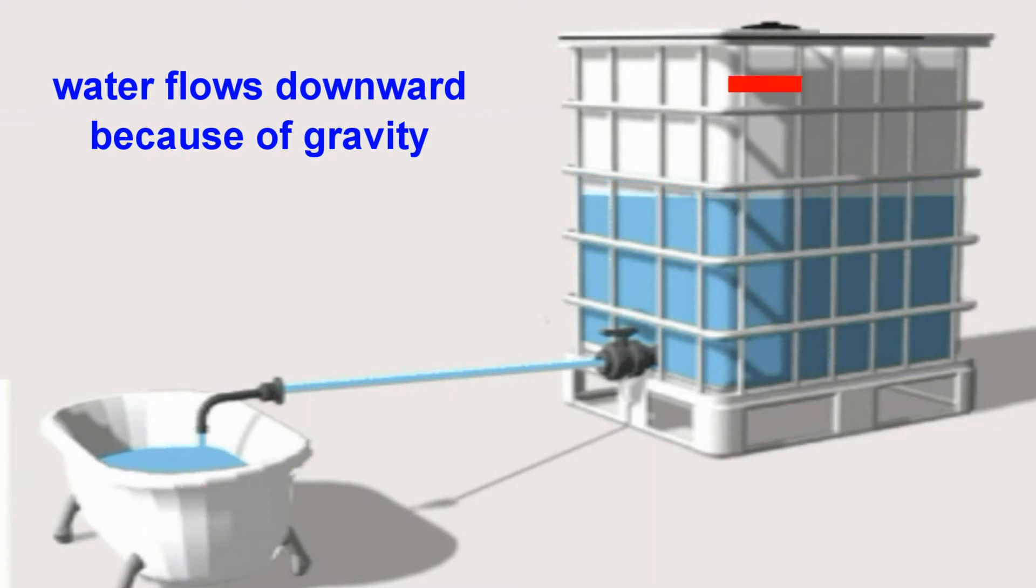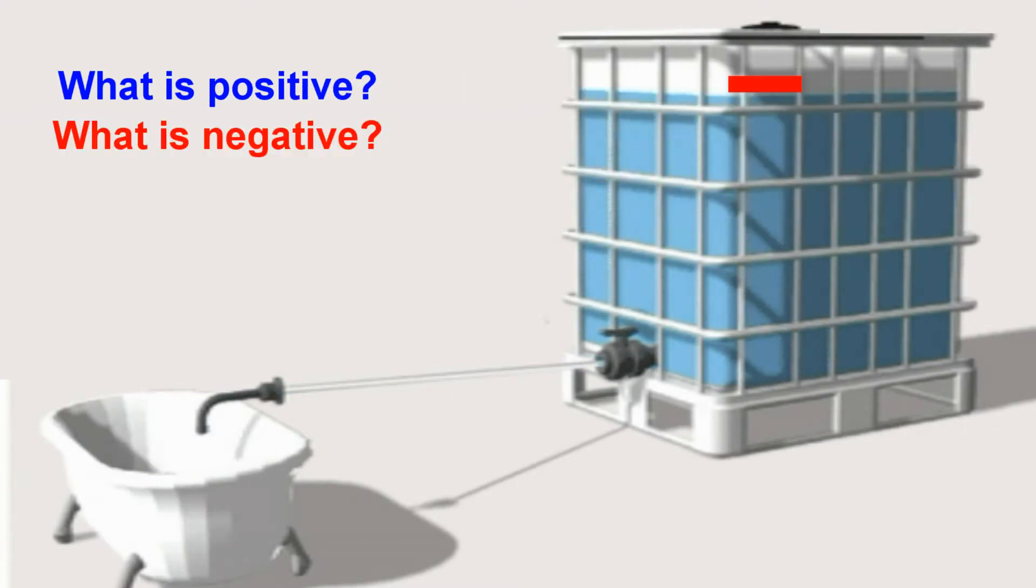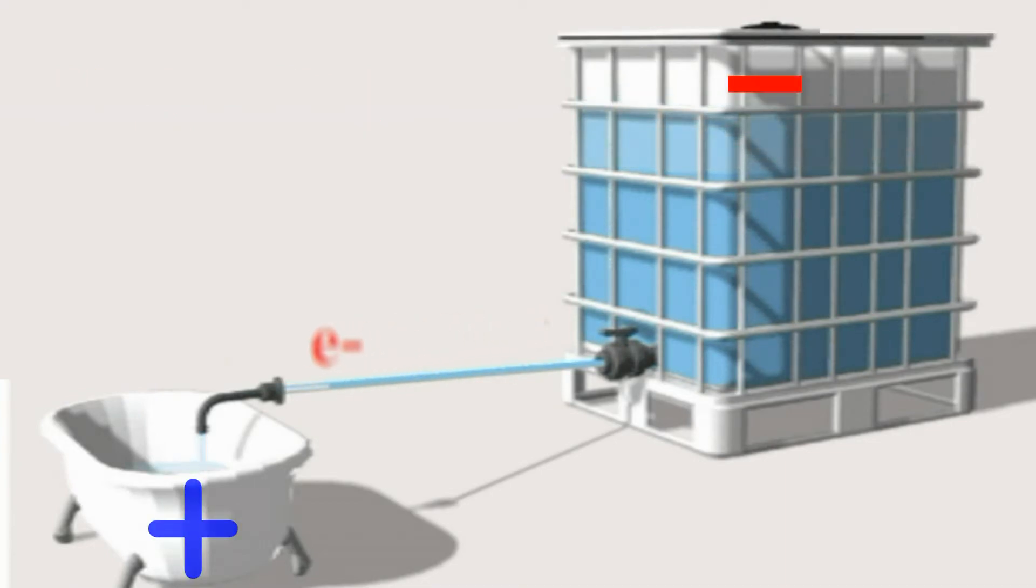What do the terms positive and negative mean in physical terms? What physical entity compels the electrons to rush downwards toward the positive pole?